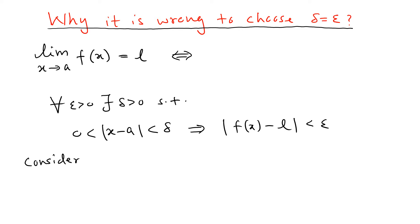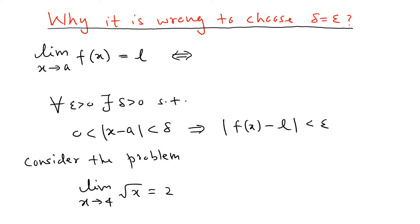Consider the problem of proving the limit as x goes to 4 of the square root of x equals 2. We know this is true because the square root function is continuous, so we can plug in the value. In this problem, f(x) equals the square root function, which is defined for x greater than or equal to zero.